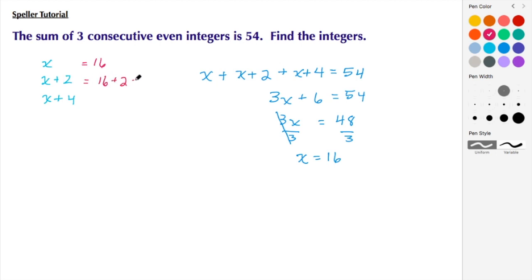The second integer is going to be 16 plus 2, which is 18, and the third integer is going to be 16 plus 4, which is 20. So here we see that our consecutive even integers are 16, 18, and 20.